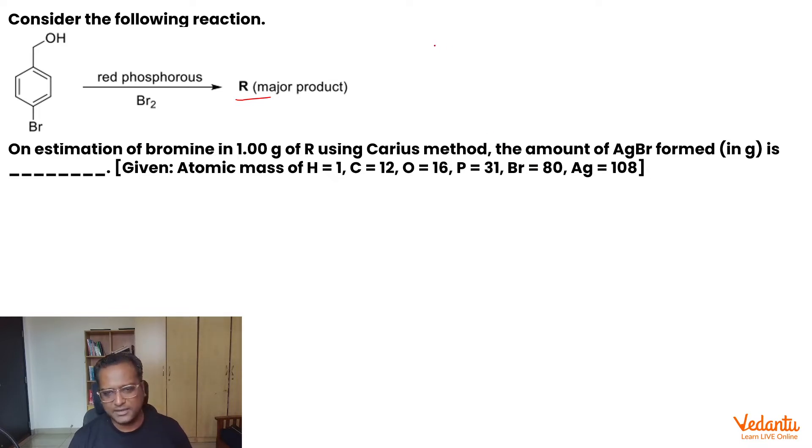Now, what happens in Carius method? We break down the given compound completely into its elements. And we do this in the presence of AgNO3, heat, acid, heat plus acid.